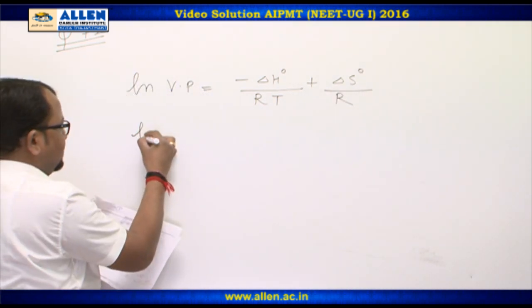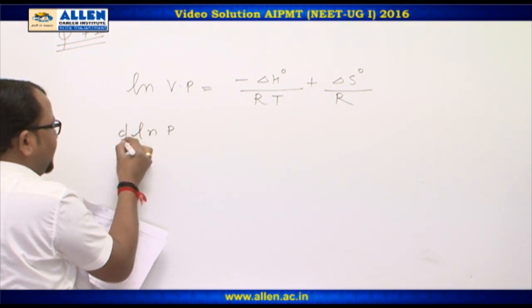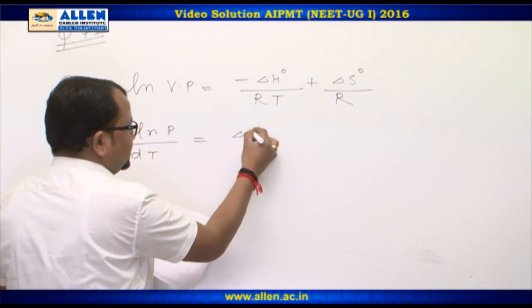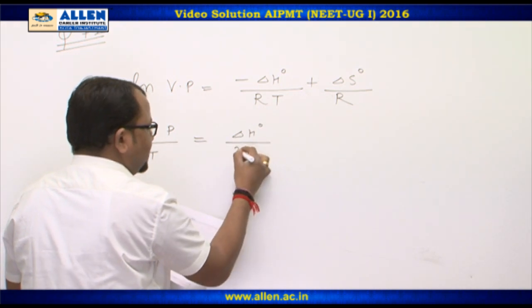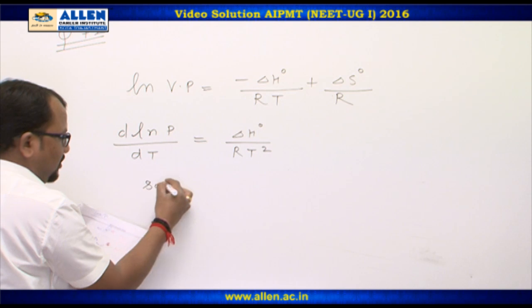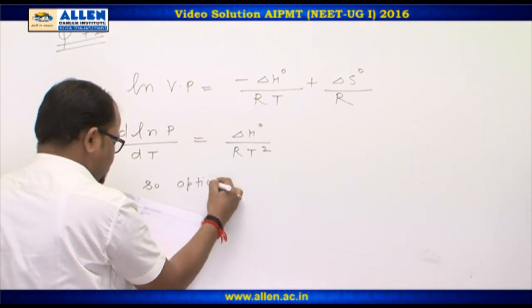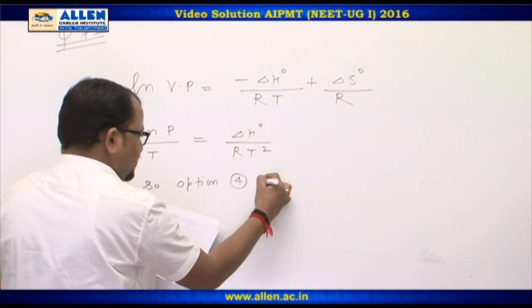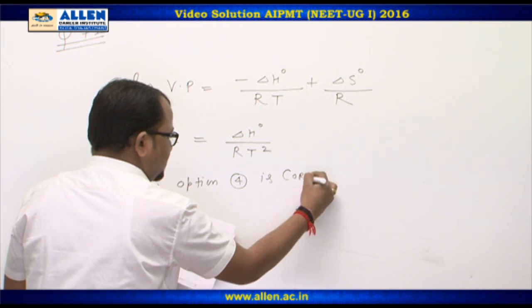Differentiate with respect to T. Hence, delta H by RT square. So, option 4 is correct.